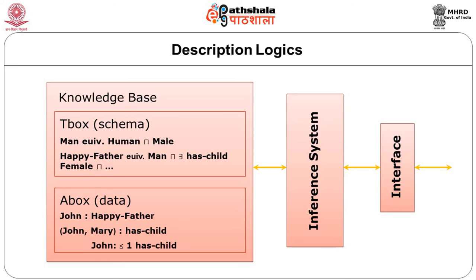In DL systems, the knowledge base is split into two parts: T-box (terminological box) and A-box (assertional box). The T-box contains all the terminologies — the ontology, classes, properties, and relations — while the A-box contains all the instances and their values like your height and weight. On top of this you can have an inference system that infers new knowledge from the existing knowledge base.